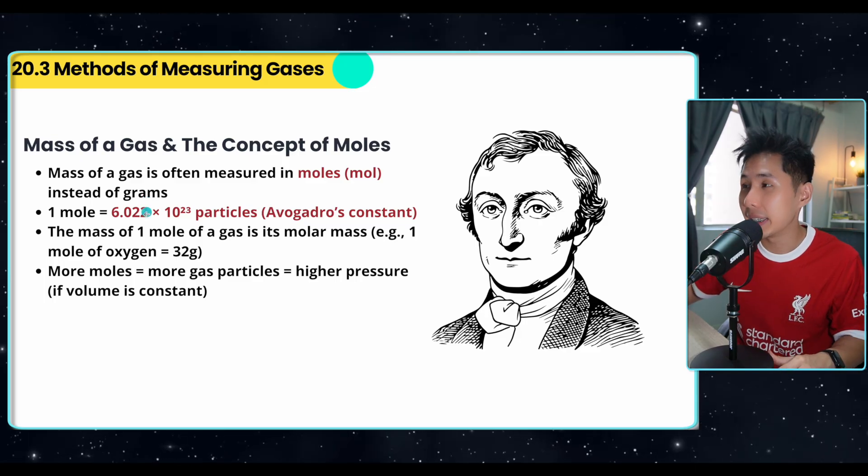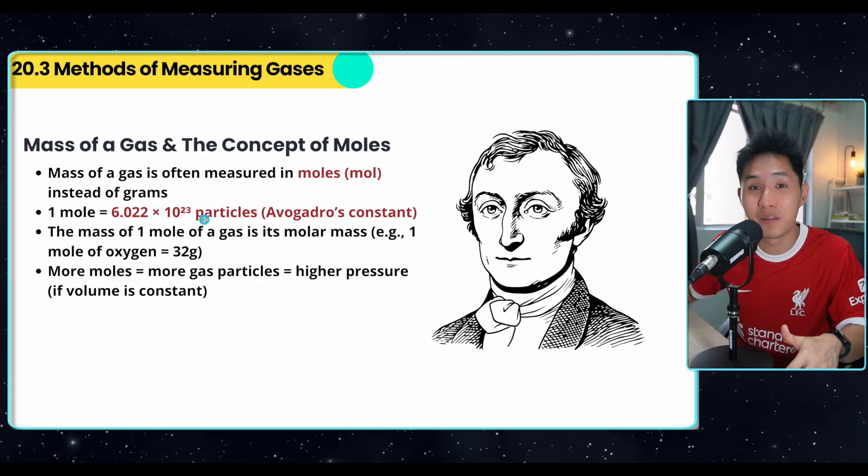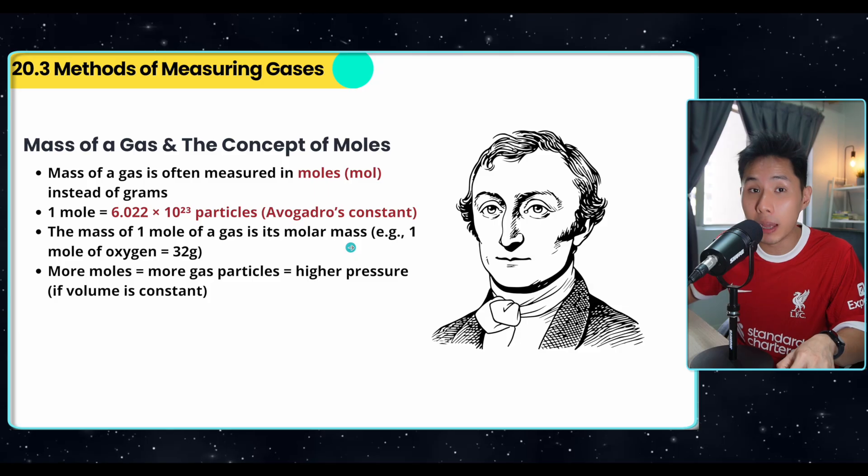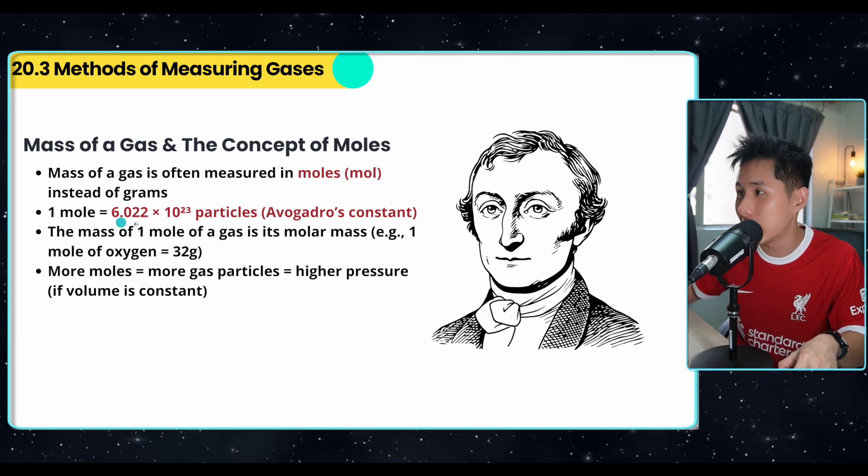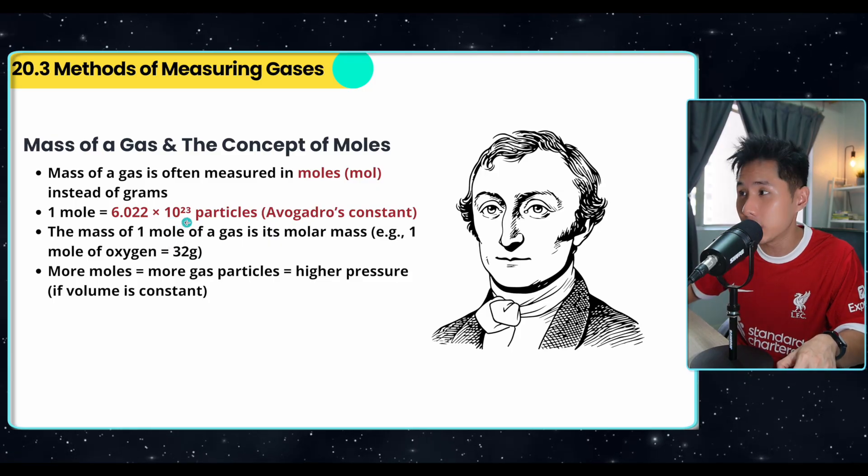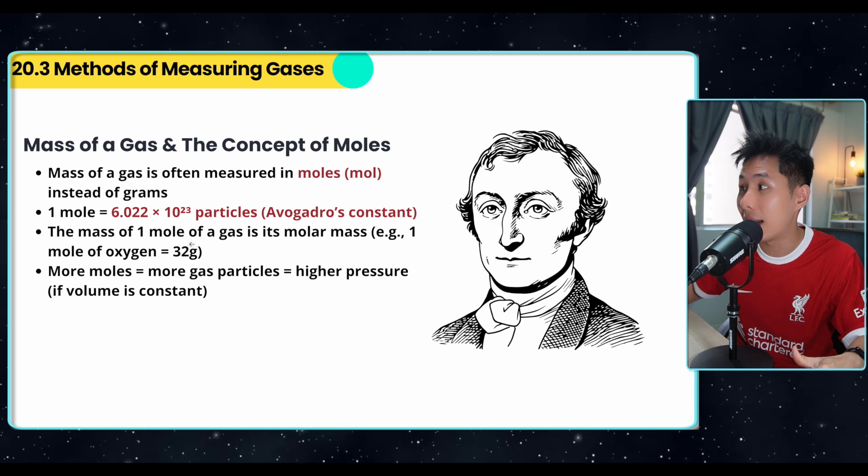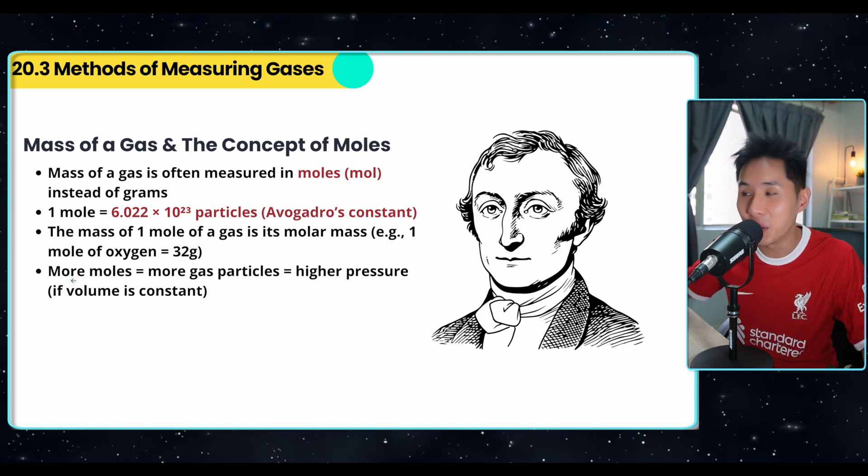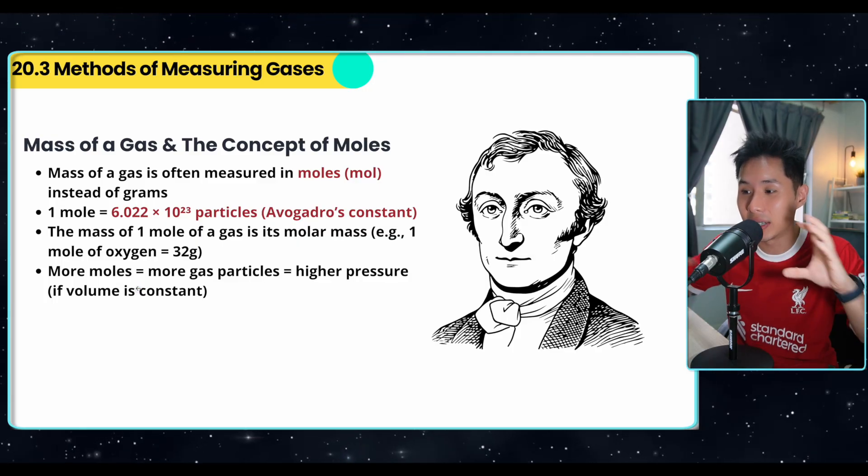So one mole is equivalent to 6.022 times 10^23 particles. This is known as the Avogadro constant. And the mass of one mole is molar mass. So for example, one mole of oxygen, which is this amount of oxygen particles, is equivalent to 32 grams. And for different elements, they will have different molar mass. So more what you need to know is that there are more gas particles. And as a result, they will exert higher pressure on a specified volume.